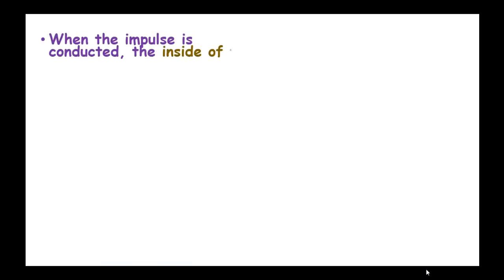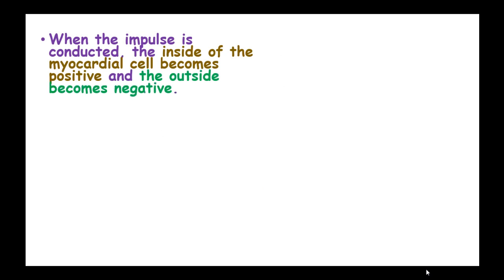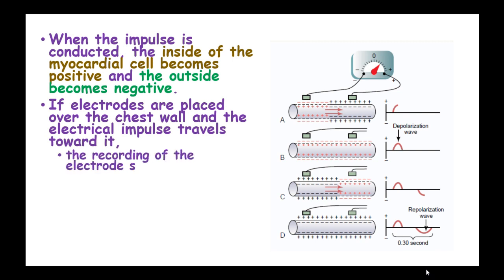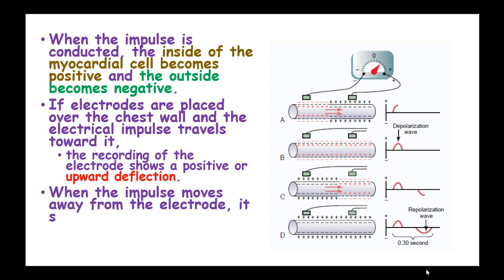When the impulse is conducted, the inside of the myocardial cells becomes positive and the outside becomes negative. If electrodes are placed over the chest wall and the electrode impulse travels towards it, the recording of the electrode shows a positive or an upward deflection. When the impulse moves away from the electrode, it shows a negative deflection.